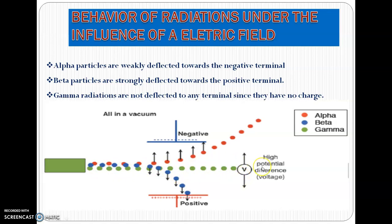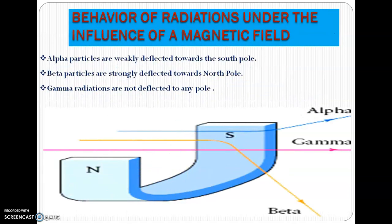Let's check out the behavior of these radiations when they're exposed to a magnetic field. Under a magnetic field, alpha particles are weakly deflected towards the south pole. Beta particles are strongly deflected towards the north pole. Gamma rays proceed straight.